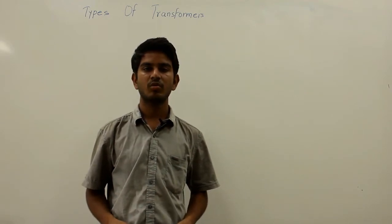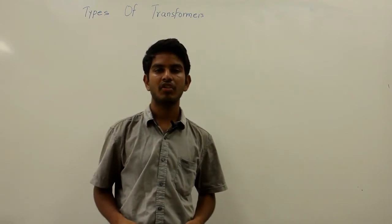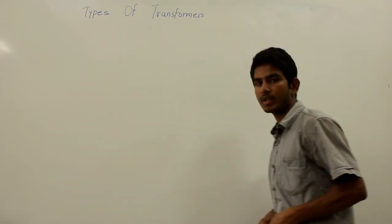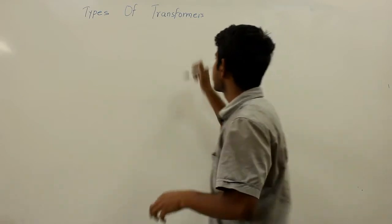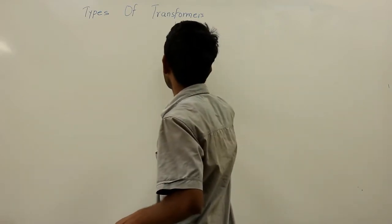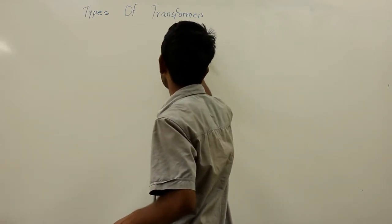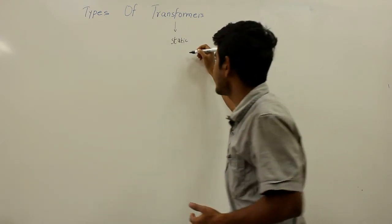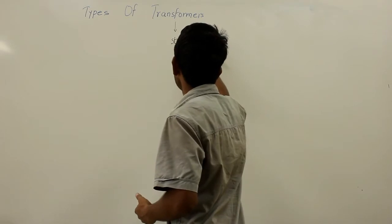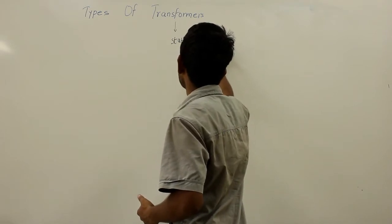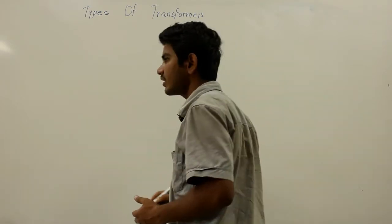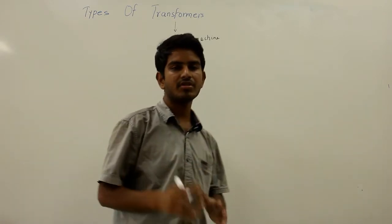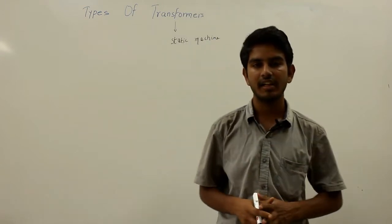Hello friends. In this video let us discuss about types of transformers used in power system networks. A transformer can be defined as a static machine used for transforming power from one circuit to another circuit without changing any frequency, using a magnetic path. It uses a magnetic circuit to transfer power from one circuit to another without altering any frequency.